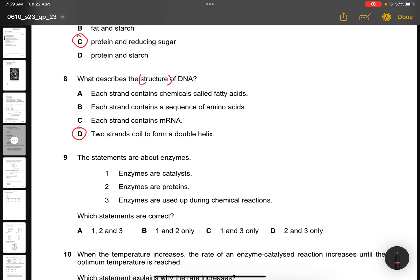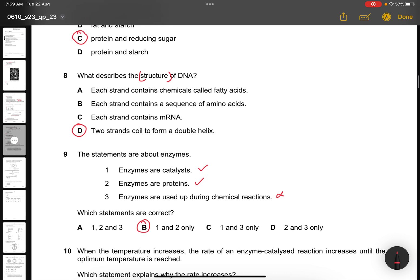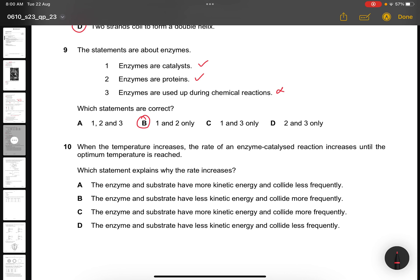Question 9. The statements are about enzymes. Enzymes are catalysts, correct. Enzymes are proteins, correct. Enzymes are used up during chemical reactions? No, they are not used up by the chemical reaction and they can be reused all over again. So the answer is B. Question 10. When the temperature increases, the rate of an enzyme catalyzed reaction increases until the optimum temperature is reached. Which statement explains why the rate increases? If you know this from physics, when temperature increases, the kinetic energy increases. Therefore, more collision happens. So the answer is C. The enzyme and substrate have more kinetic energy and collide more frequently.